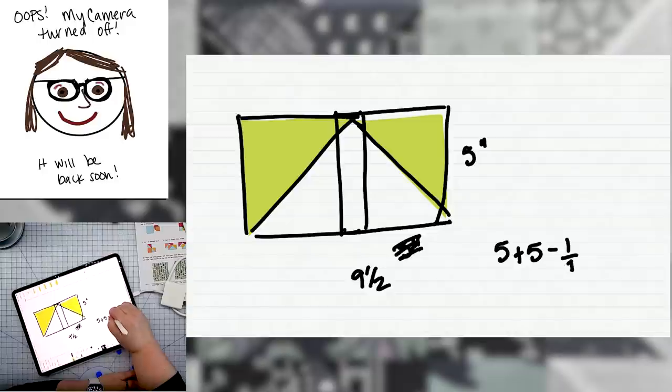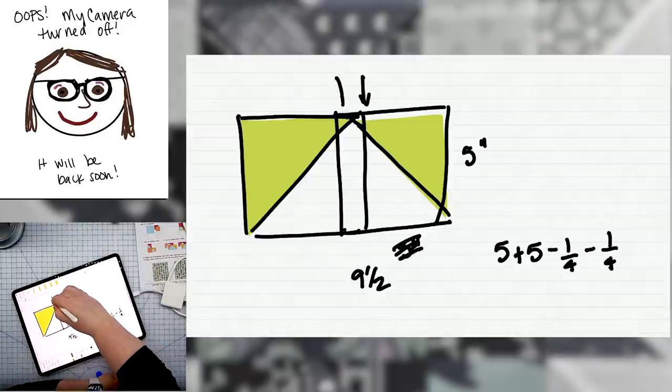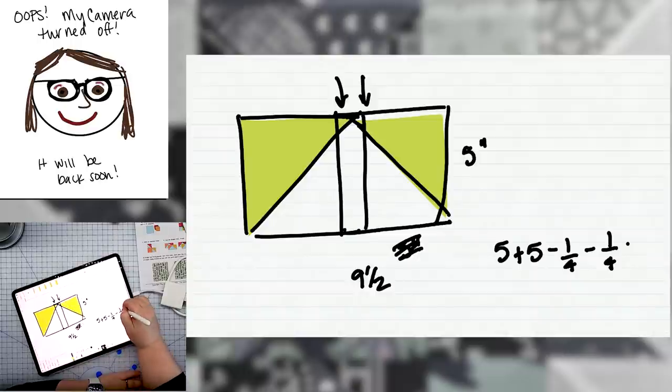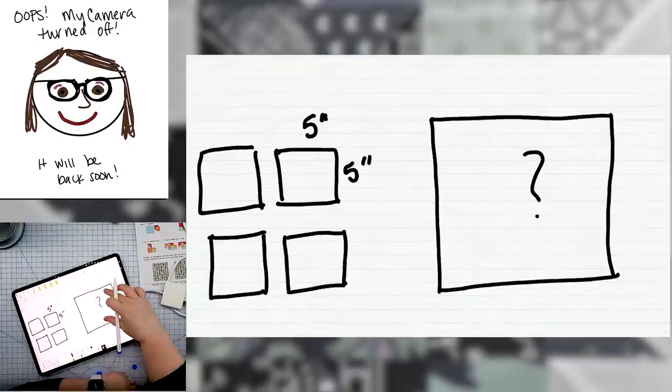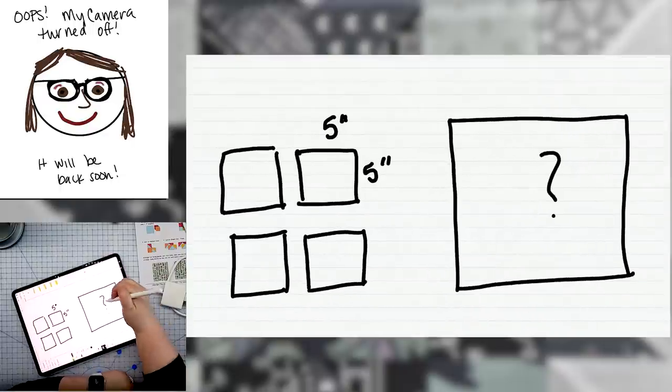and that cost us a quarter of an inch twice because there are two seam allowances. So those together equal one half. So nine and one half. And that is the size of our mystery square that we need to cut.